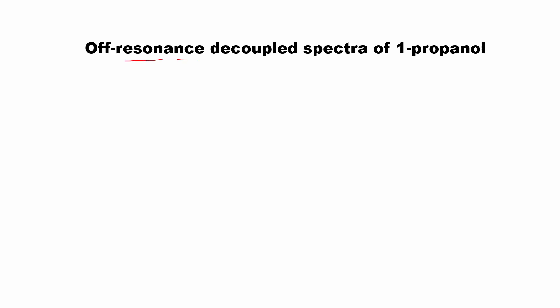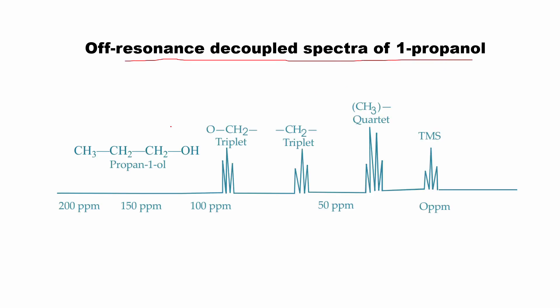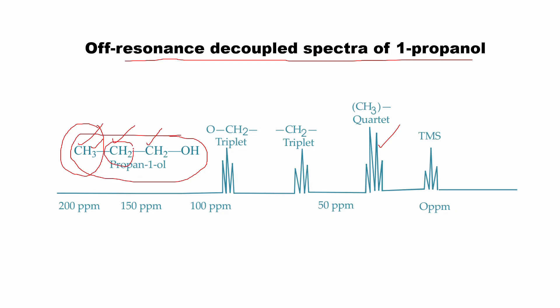For example, see the off-resonance decoupled spectrum of 1-propanol. The structure of 1-propanol has three types of carbon: a CH₂ carbon, another CH₂ carbon, and a CH₃ carbon. The CH₃ carbon is directly attached to three hydrogen atoms and hence couples with those protons, forming a quartet according to the N+1 rule. The CH₂ group has two protons, so N equals 2 and according to the N+1 rule, the CH₂ group gives a triplet.